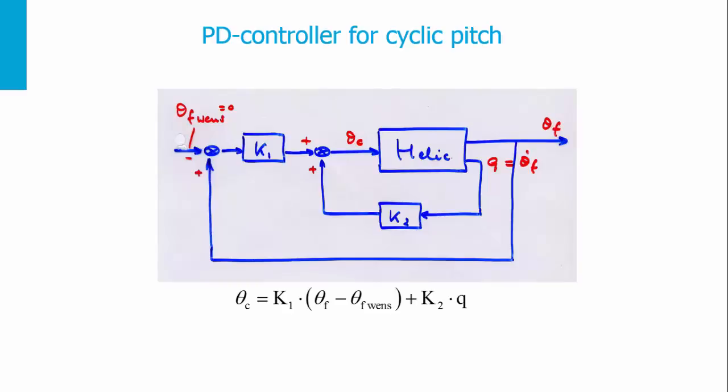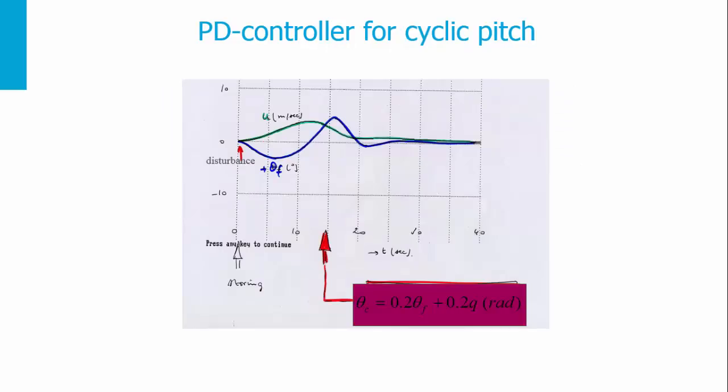The derivative D action is used to provide anticipative action. As output, we take the pitch rate, which is now fed back to the input controller and theta C, giving us the D action of the controller. Plotting the simulation results again, if the PD controller enters from 15 seconds of flight, we stabilize quicker in horizontal velocity and in pitch attitude.